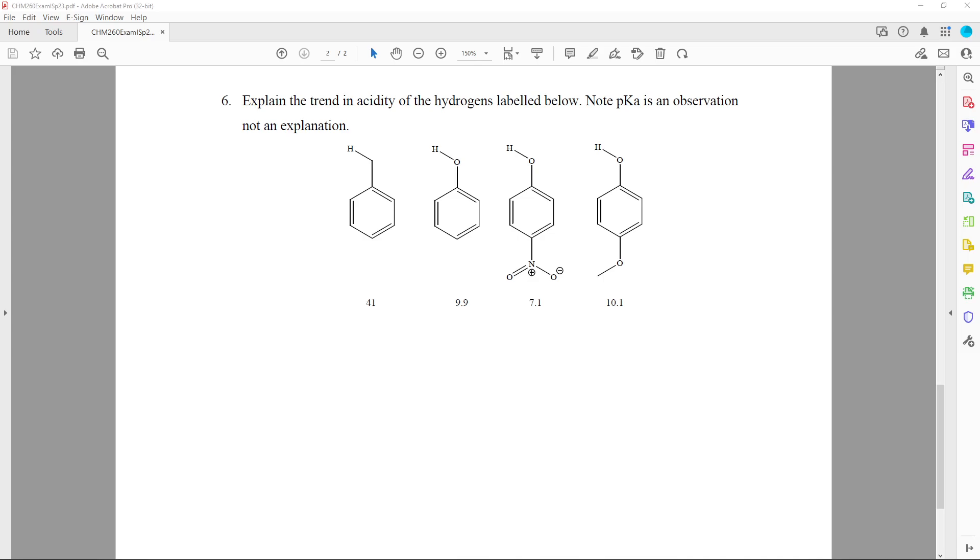In this case, basically we have two things going on. Every case here has resonance problems because of the aromatic rings. The first one on the left, toluene or methyl benzene, does not have an oxygen, and so that hydrogen is drastically less acidic.